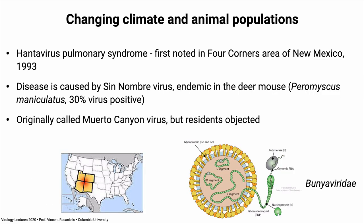Here's a good example of environmental changes leading to virus emergence via changes in animal populations. Hantavirus pulmonary syndrome is a very serious respiratory disease first noted in the Four Corners area in 1993, where four U.S. states come together. Young people were getting severe and lethal respiratory disease with no clue as to the source. It turned out to be caused by a virus eventually named Sinombre virus, found to be endemic in the deer mouse, Peromyscus maniculatus.